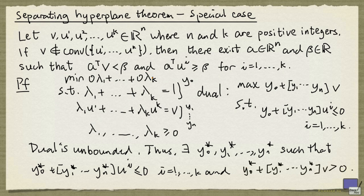But now we get our result by setting a to be the one column matrix with entries minus y1 star, up to minus yn star, and beta to be y0 star.